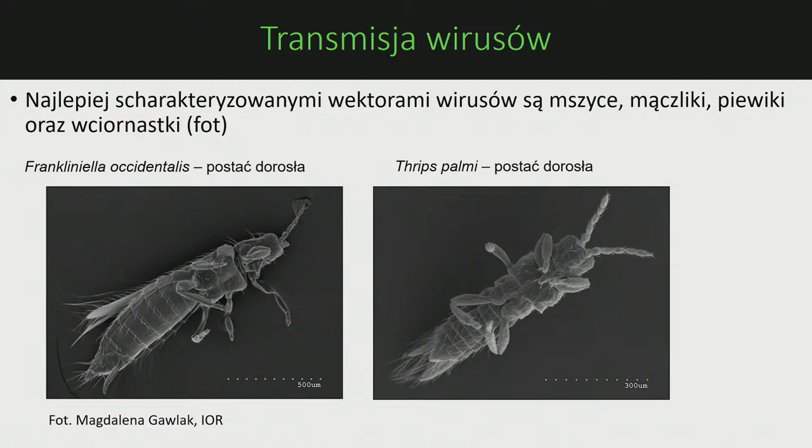Najlepiej scharakteryzowanymi wektorami wirusów są mszyce, mączliki, piewiki, skoczki oraz wciornastki.